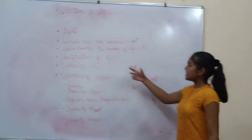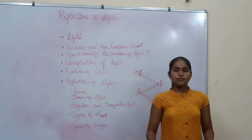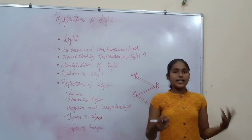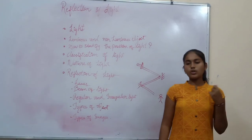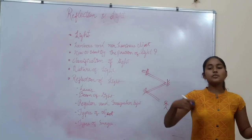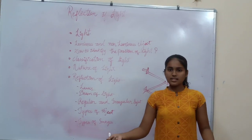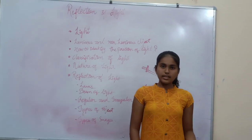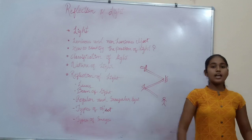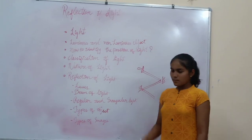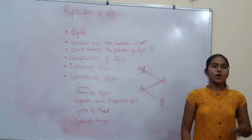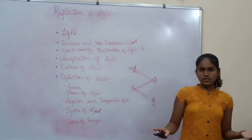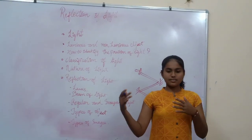Now let us look at the nature of light. The nature of light has three theories that we are going to discuss — wave theory, particle theory, and quantum theory. Wave theory explains diffraction, interference, and polarization and all other things. Particle theory explains diffraction and reflection, which we are going to see in this chapter. Quantum theory is given by Albert Einstein, and it explains one theory combining wave theory and particle theory.